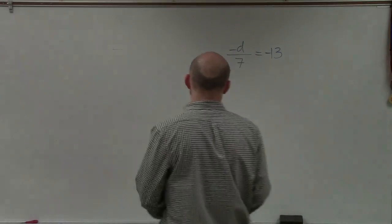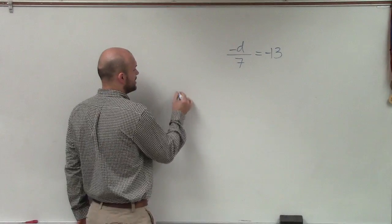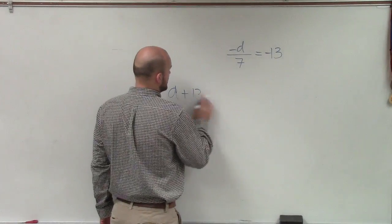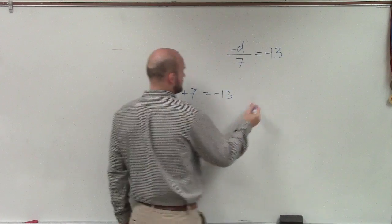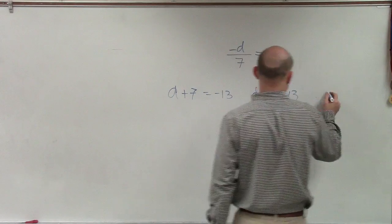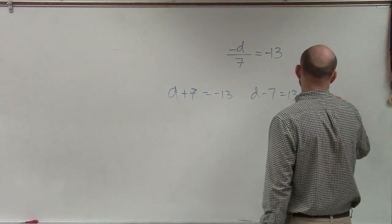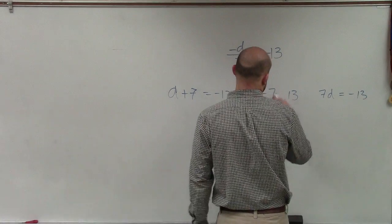Because this is where students get so messed up. So let's forget about the negative sign right now, but let's just go through some simple problems. What if I had d plus 7 equals negative 13? Let's say I have d minus 7 equals negative 13, and let's say I have 7d equals negative 13.